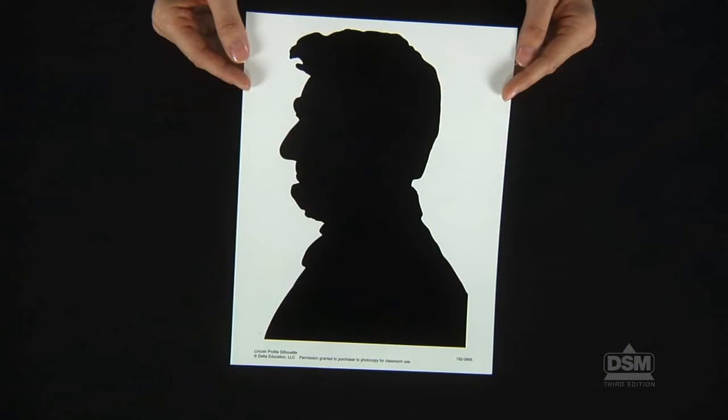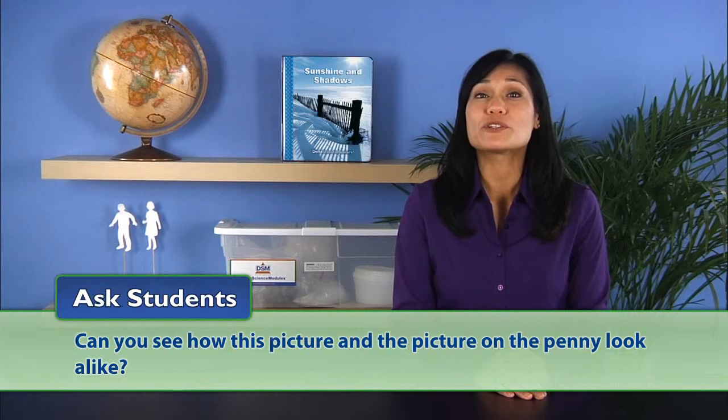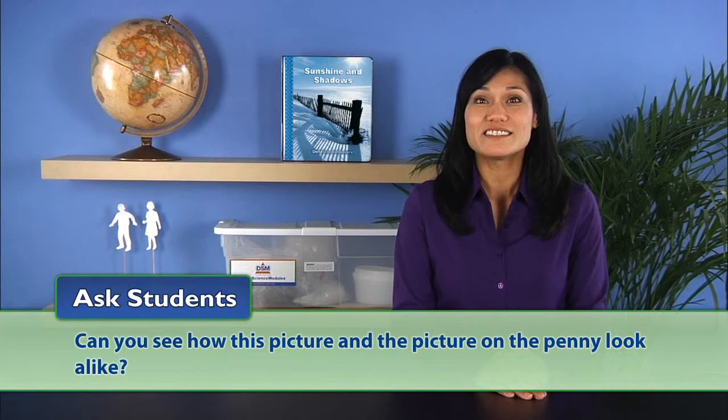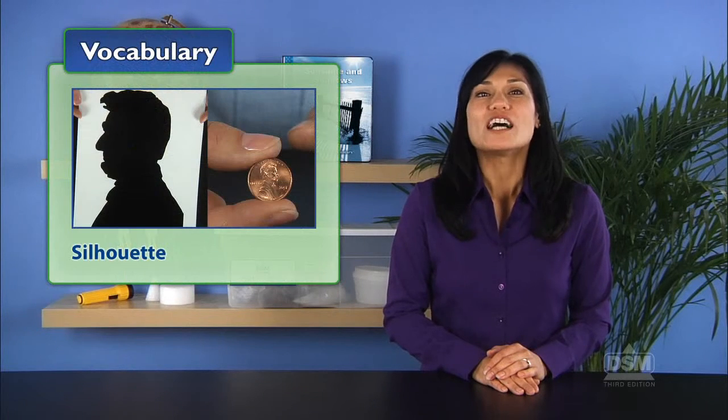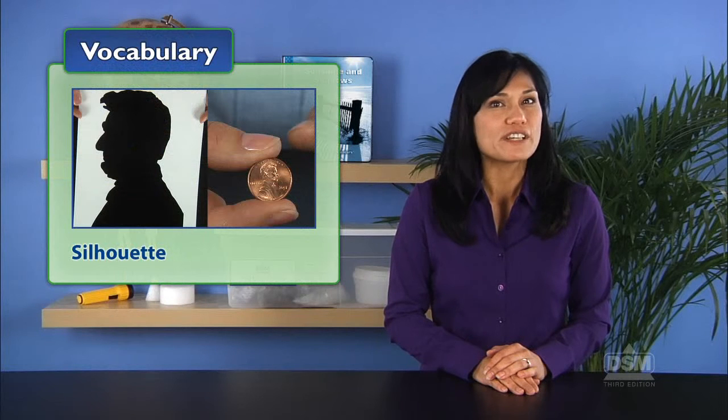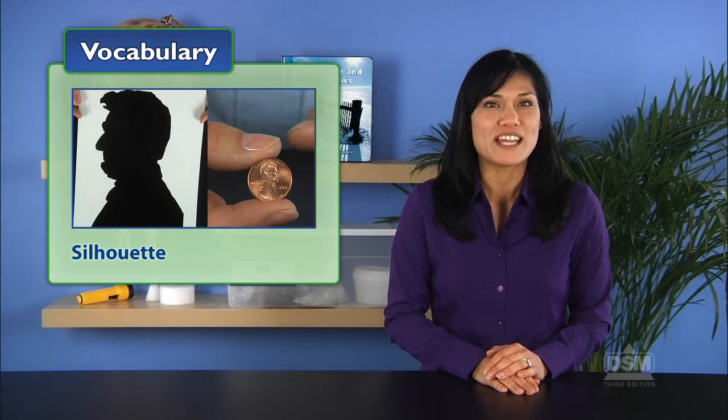Hold up the Lincoln profile silhouette again and ask students, can you see how this picture and the picture on the penny look alike? Allow students to describe the similarities they have noticed. Then, explain to the class that the type of picture you are holding is called a silhouette, or a shadow-like image that looks very much like an outline of the actual object. Describe that silhouettes are made by drawing or tracing the outline of something, then filling in the outline with a solid color.